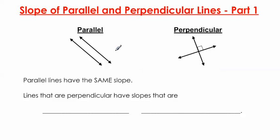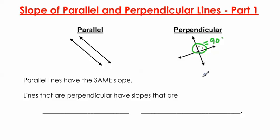First of all, what are parallel lines? Parallel lines are two lines that have the same slope, which means they're never going to touch. Versus perpendicular lines, which are two lines that intersect at a 90-degree angle. This is a 90-degree angle marker indicating that these two lines are perpendicular to each other.